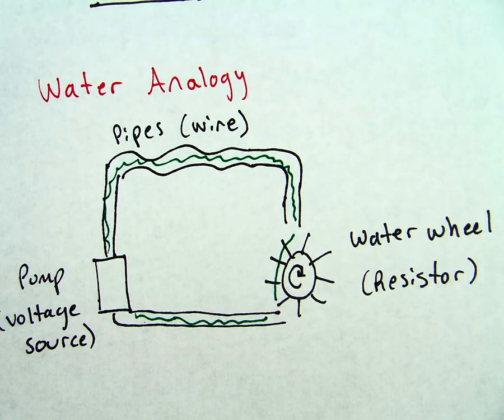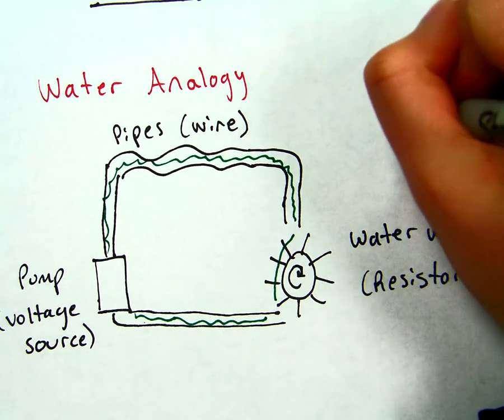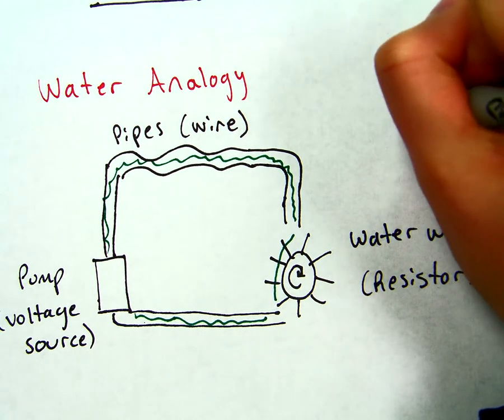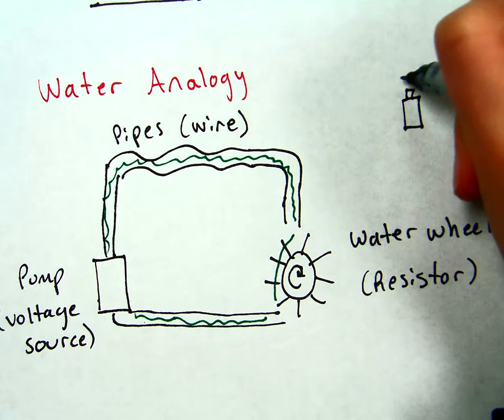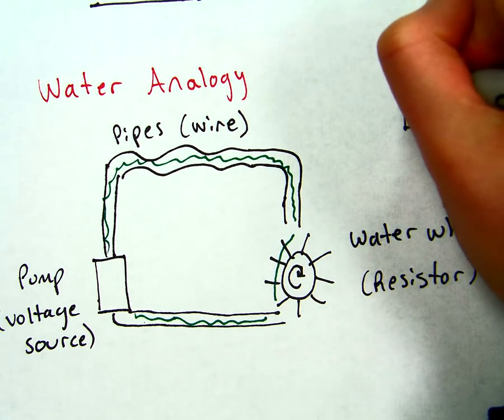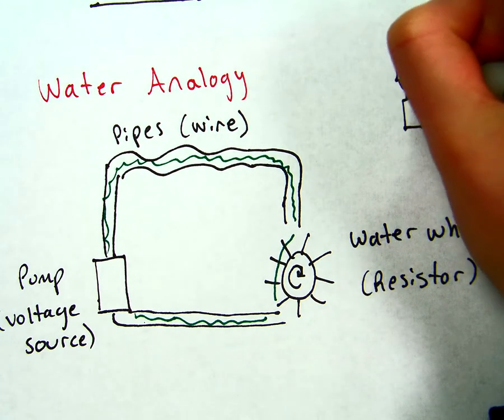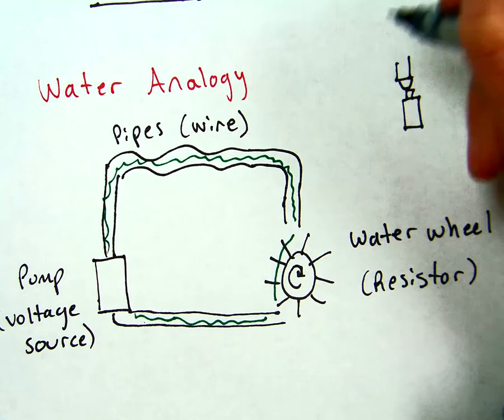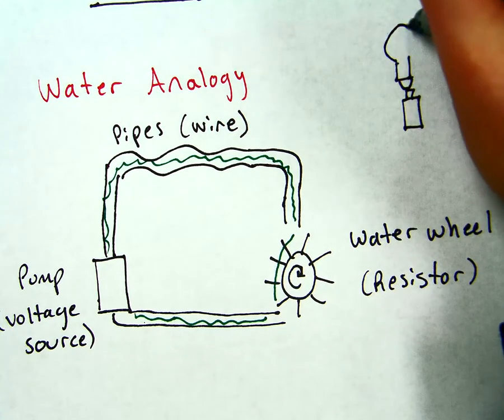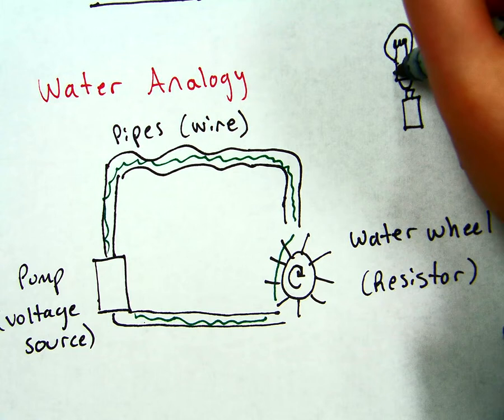And so this is a basic circuit. This circuit might look like the one that we did in class with our circuits challenge. When we had a battery, the light bulb, and the wire.